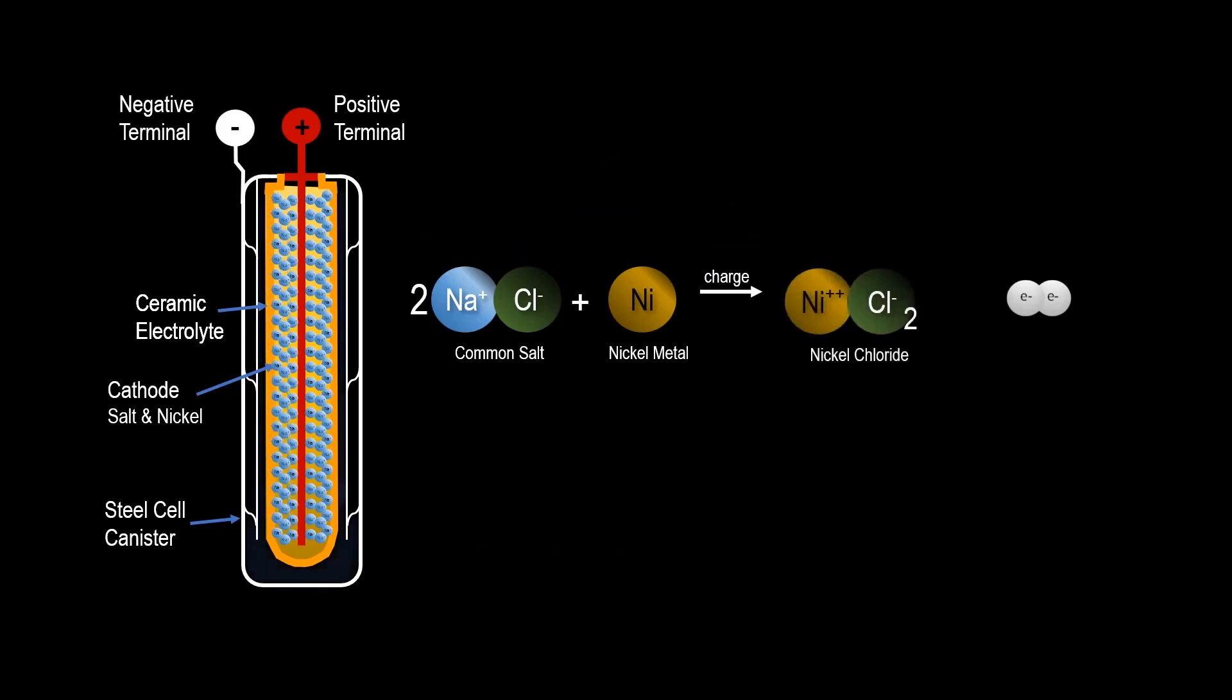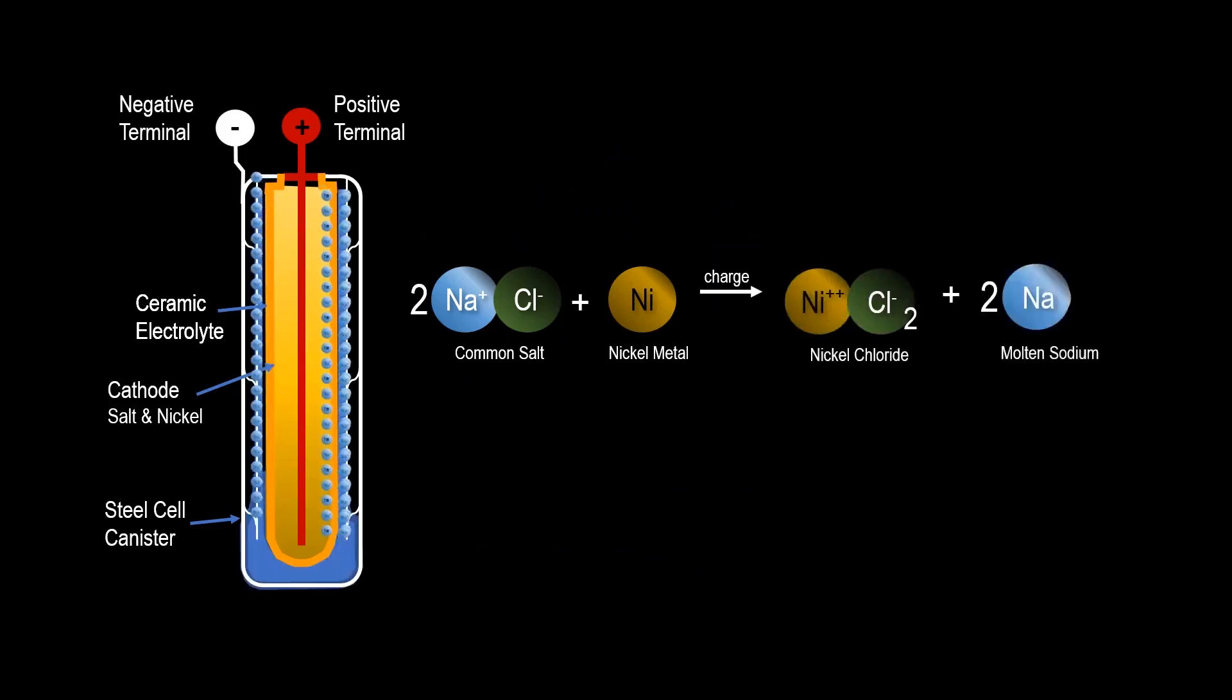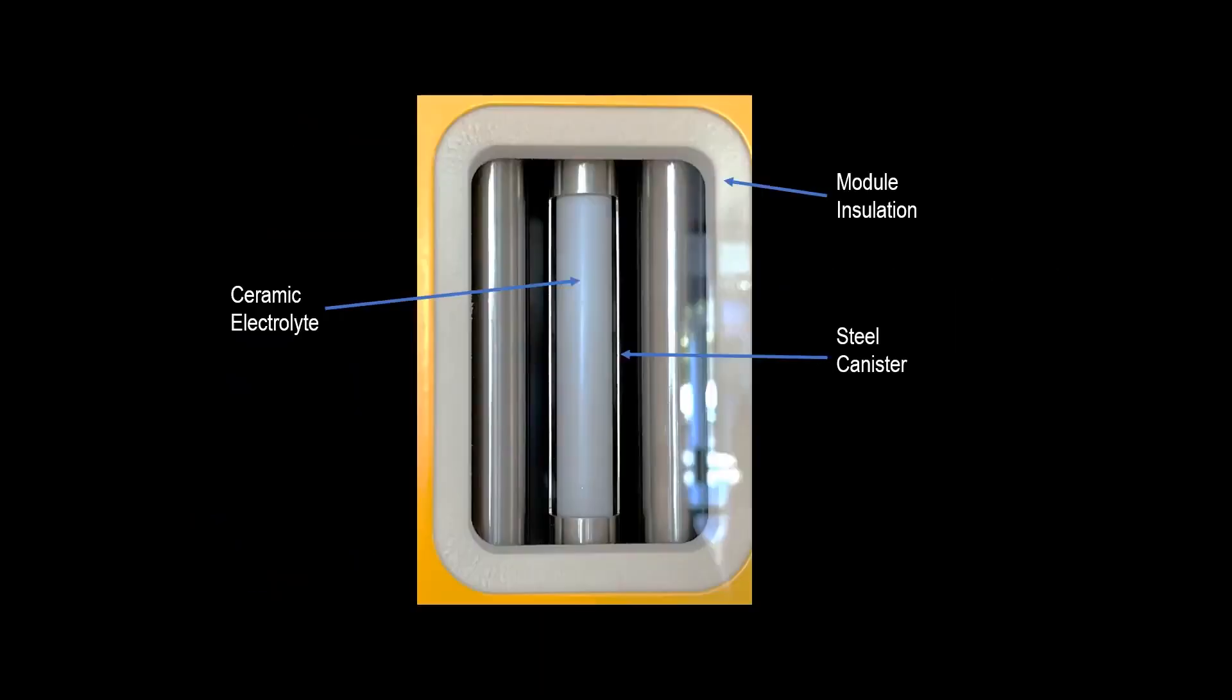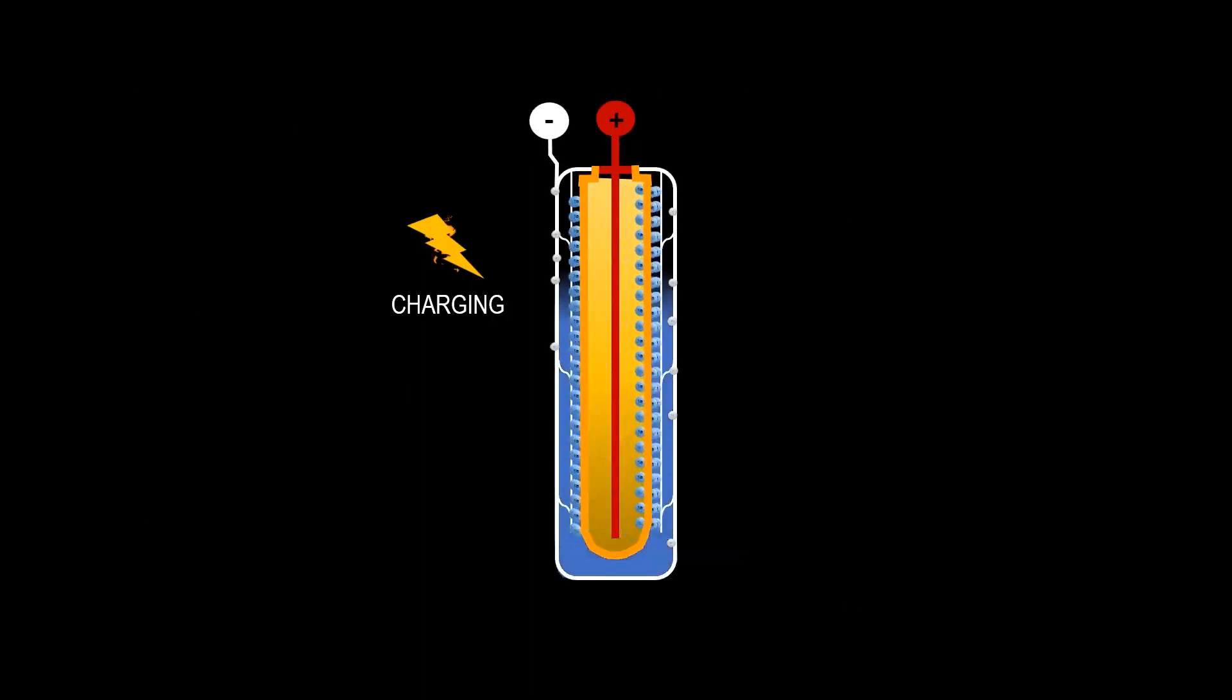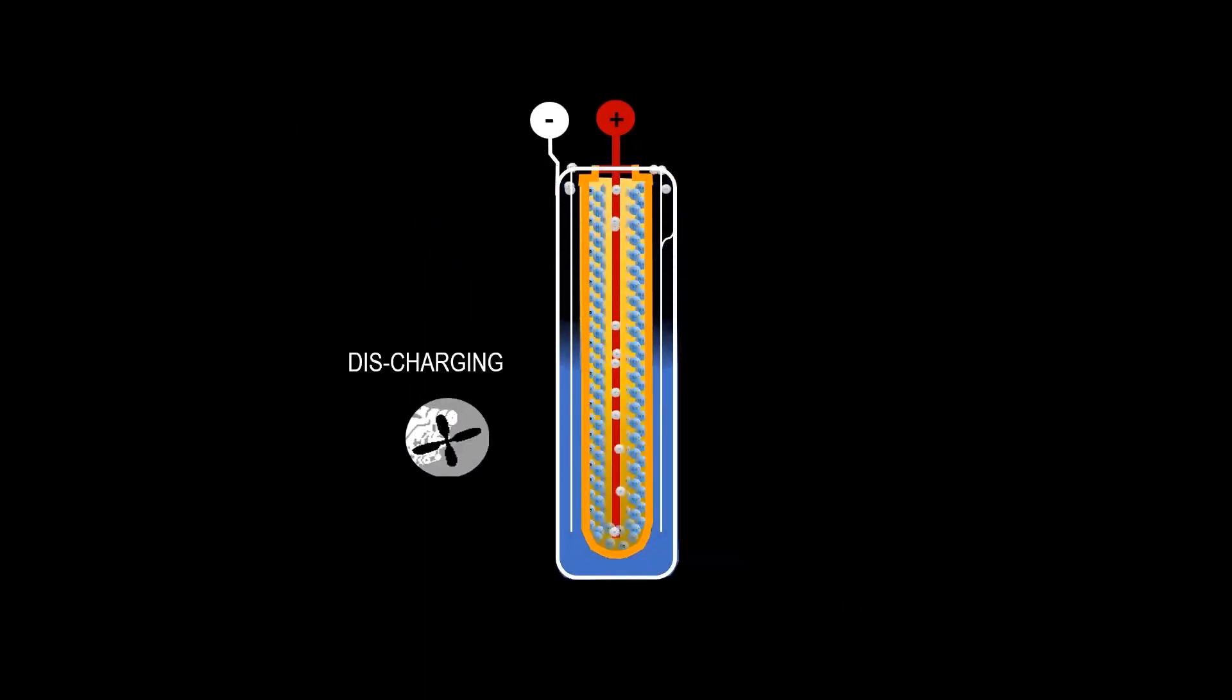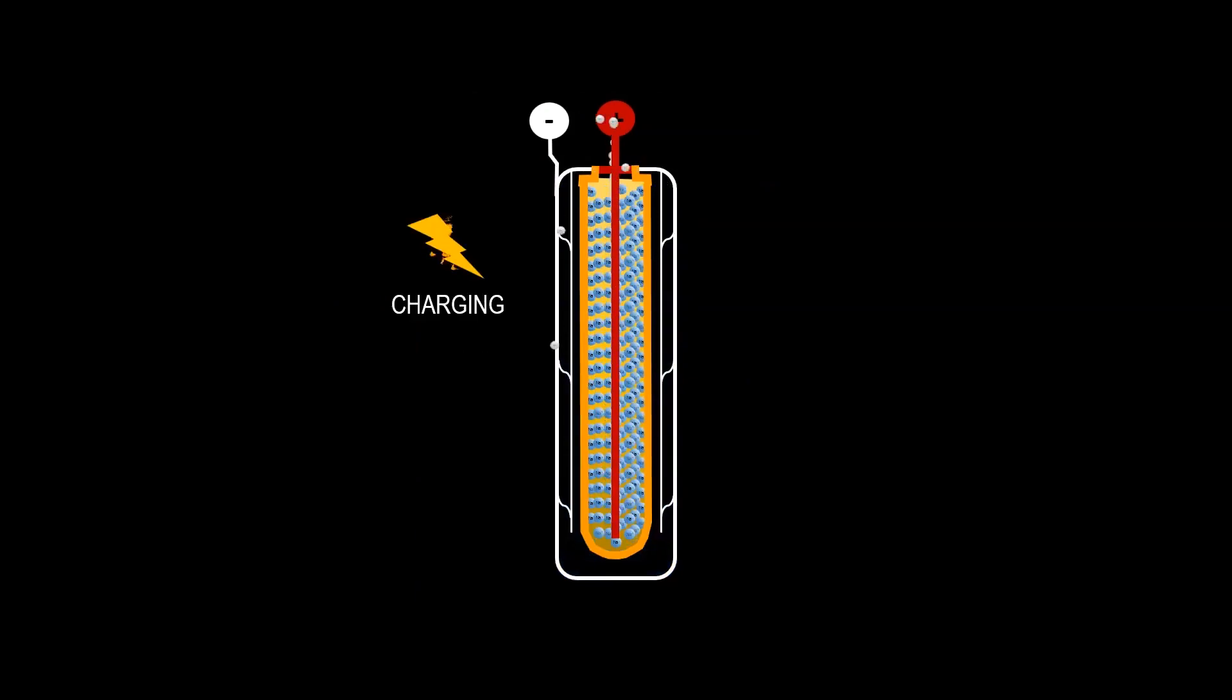During charging, migrating sodium ions form a molten sodium anode layer between the outside of the ceramic tube and the steel canister. The fact that the anode cell forms during charging and dissolves during discharge is unique for these SirEnergy batteries.